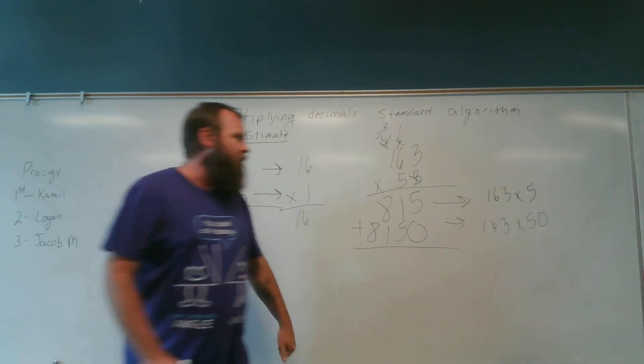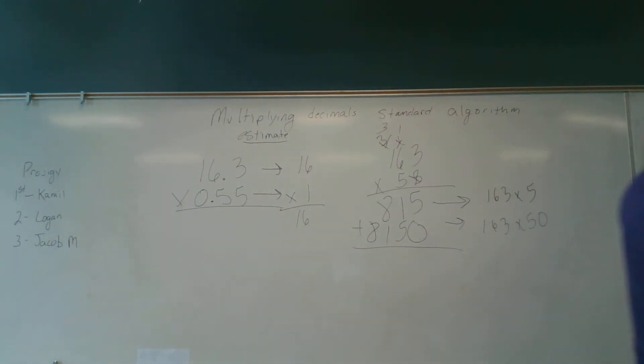Do we notice the difference? If I multiplied it by 5 it was 815. If I multiplied it by 50 it's 8,150. All I have to do is the same thing I did here, just put a 0 in the ones place and move everything to the left one place value.